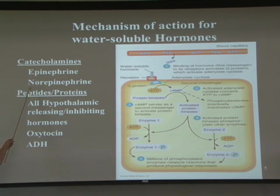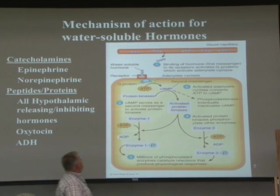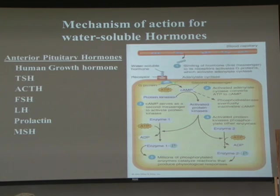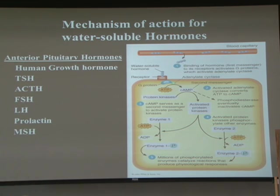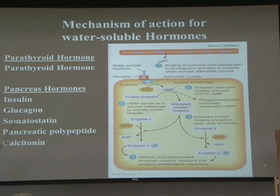Examples of water-soluble hormones include epinephrine and norepinephrine (catecholamines) from the adrenal medulla, all hypothalamic releasing and inhibiting hormones, oxytocin, ADH, human growth hormone, thyroid stimulating hormone, adrenal corticotropic hormone, follicle stimulating hormone, luteinizing hormone, prolactin, melanocyte stimulating hormone. There are far more water-based hormones than lipid-based hormones. Also: parathyroid hormone, insulin, glucagon, somatostatin, vasoactive polypeptide, calcitonin.